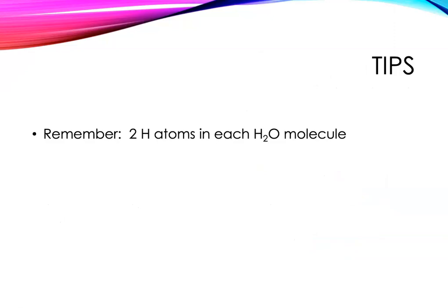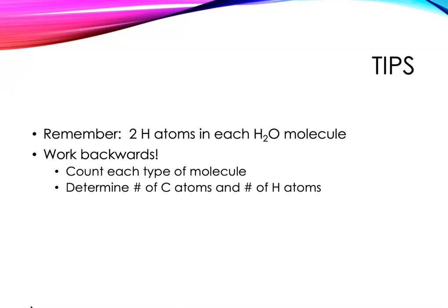Some tips for solving these problems: common mistakes students will forget that each water molecule has two hydrogen atoms, and if you don't take that into account properly you're not going to get the right formula. The other thing to remember is that you're working backwards oftentimes in these problems, so you have to count each type of molecule. How many CO2s are there? How many H2Os are there? And from that you can figure out the number of carbon atoms and the number of hydrogen atoms, and then you can find the ratio of carbon to hydrogen atoms for your formula and you can work out an empirical formula from that.